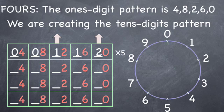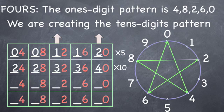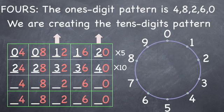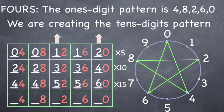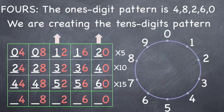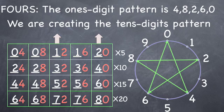Let's do another row: 2, 2, up to 3, 3, and up to 4, and 4 is 10 fours. Then 4, 4, up to 5, 5, and up to 6, and again 6, 6, up to 7, 7, and up to 8, and we have created the 4s up to 20 times 4 is 80.